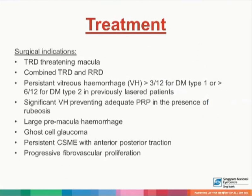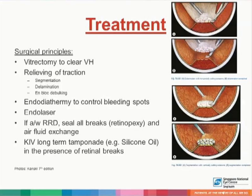Indications for surgical treatment include tractional retinal detachment threatening the macula, combined tractional as well as rhegmatogenous retinal detachment, persistent vitreous hemorrhage more than three months for type 1 diabetics or more than six months for type 2 diabetics in previously lasered patients, or significant vitreous hemorrhage preventing adequate panretinal photocoagulation in the presence of rubeosis. Other indications include large premacular hemorrhage, ghost cell glaucoma, persistent CSME with anteroposterior traction, and progressive fibrovascular proliferation.